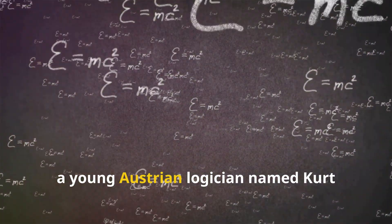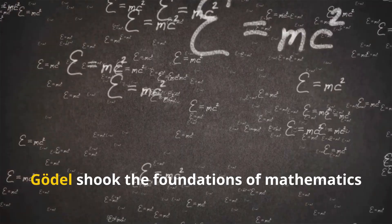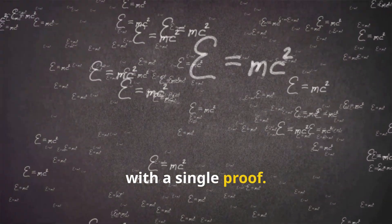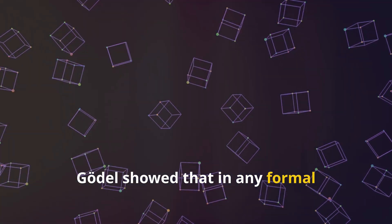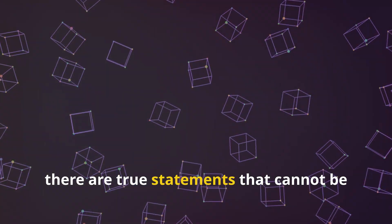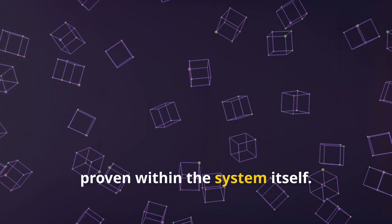In 1931, a young Austrian logician named Kurt Gödel shook the foundations of mathematics with a single proof. Gödel showed that in any formal mathematical system complex enough to describe basic arithmetic, there are true statements that cannot be proven within the system itself.